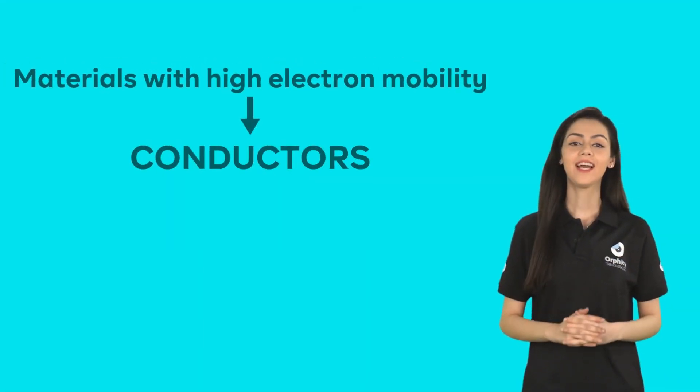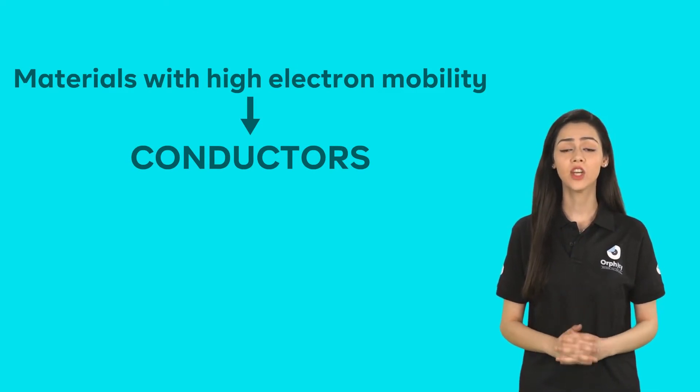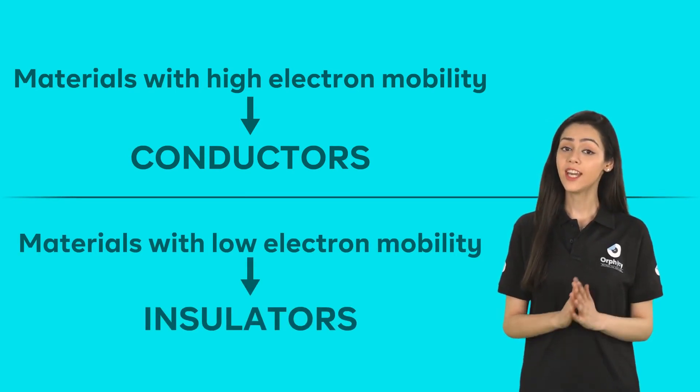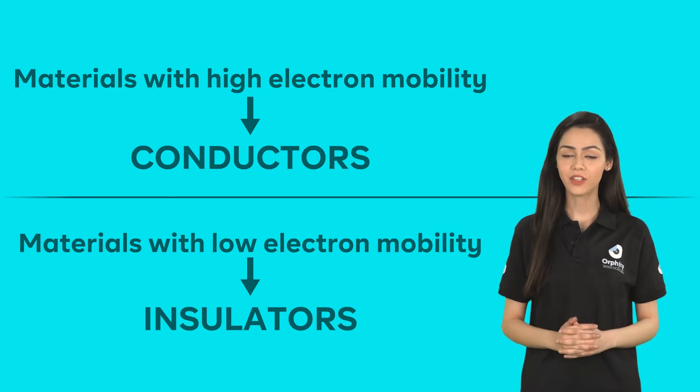How easily an atom gives up or gains electrons is called its conductivity. Good conductors have loosely bound electrons which are easily transferred or lost. Insulators or poor conductors lack in these loosely bound electrons.